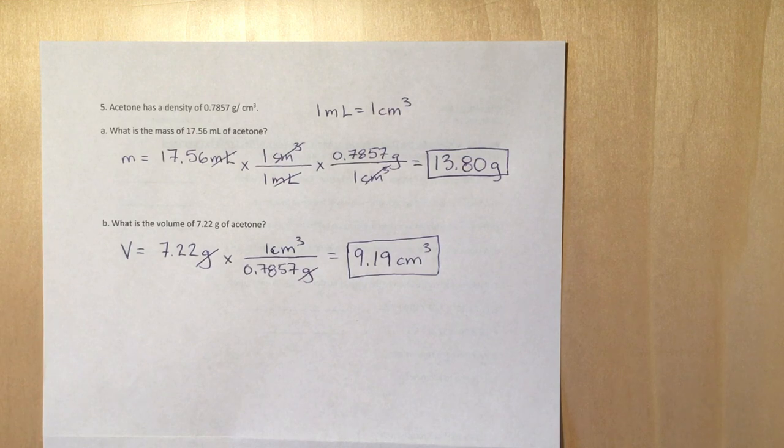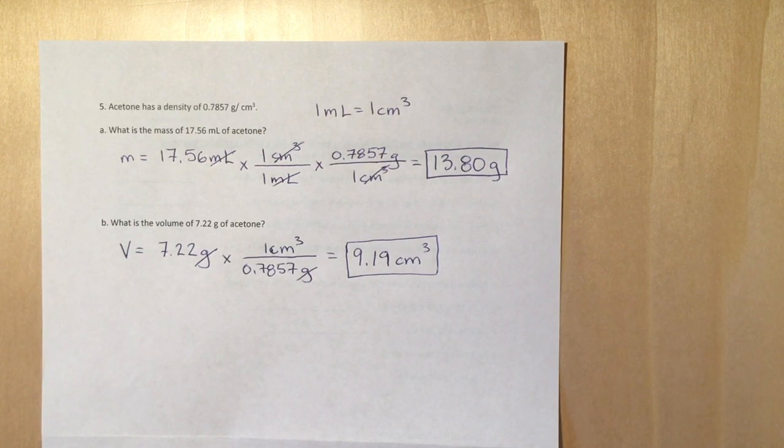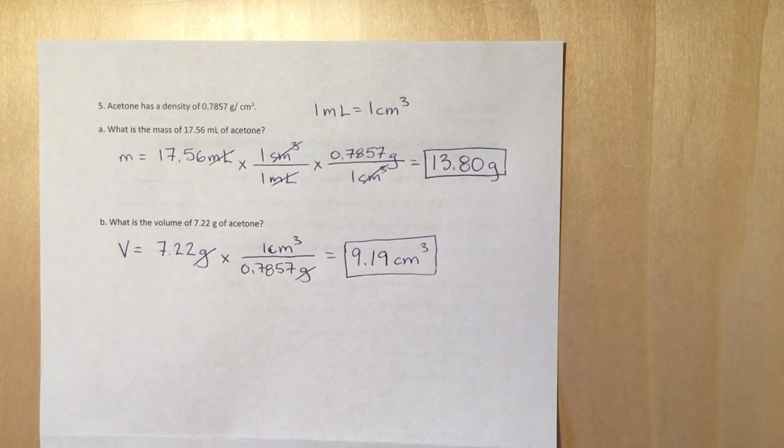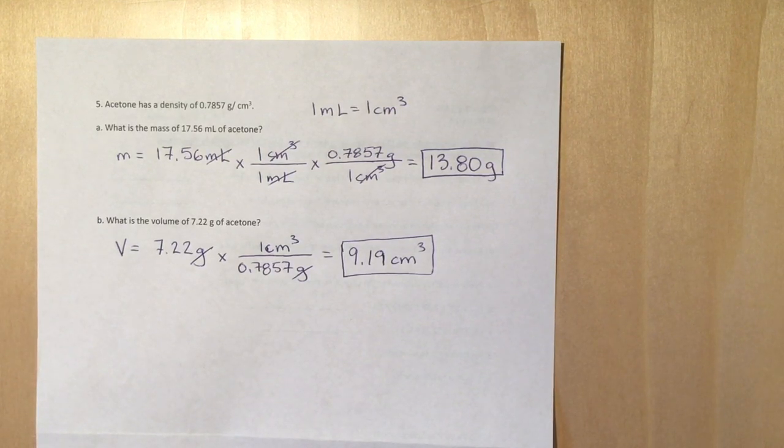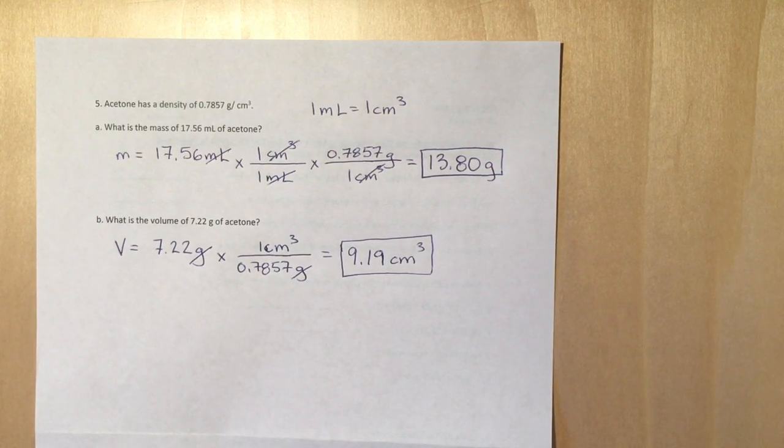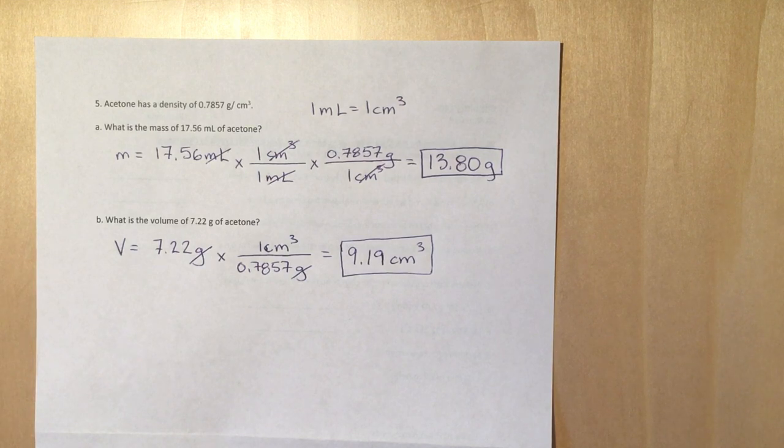For the first question it asks, what's the mass of 17.56 milliliters of acetone? So what you're really doing is just converting from volume to mass. You have volume units that are in milliliters and you have mass units in grams. So you just cancel out your units to get the units that you want.